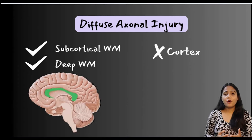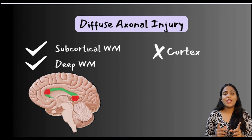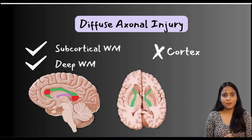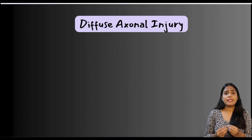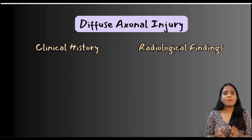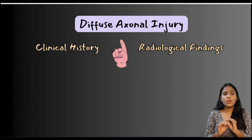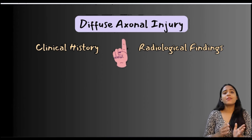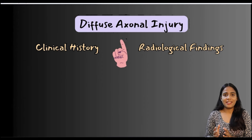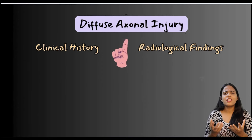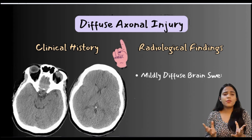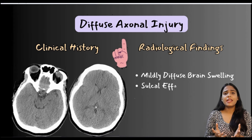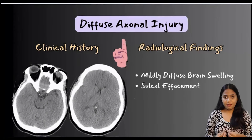Sites commonly involved are the corpus callosum — its genu and splenium — the fornix, and the internal capsule. Initial CT scans are often normal, and we suspect a DAI when there is a huge discrepancy between the clinical findings and the radiological findings. Initial CT scans may just show diffuse mild brain edema with sulcal effacement.